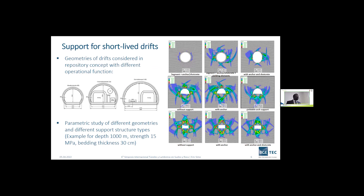In the repository concept currently considered in Germany, we assume arch-shaped cross-sections. The cross-section diameter varies depending on the function of the drift — from about 3 meters up to 5.5 meters. We wanted to test these assumptions and performed several analyses varying not only the cross-section but also the support technology.